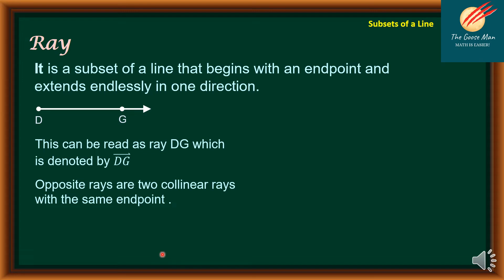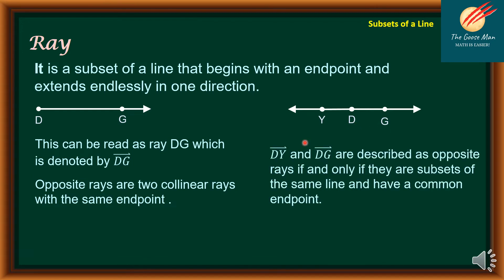Opposite rays are two collinear rays with the same endpoint. Let's consider this example. We have points Y, D, G are collinear points, such that D is between the points Y and G.